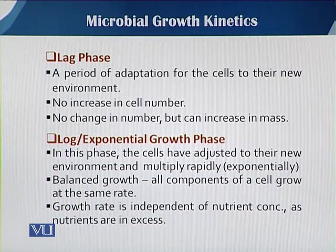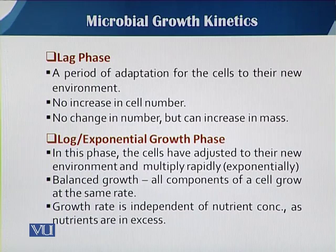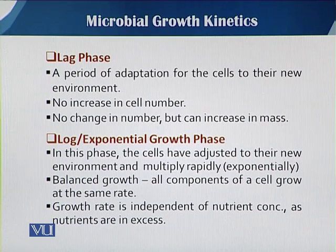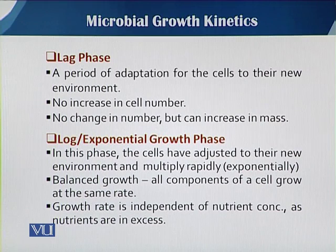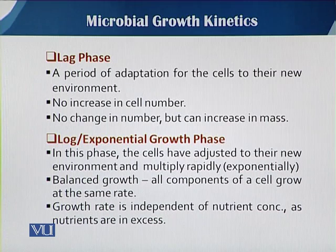As concerned the log phase or exponential phase, in this phase the cells have adjusted to their new environment — because they already adjusted in the lag phase — and they are ready to multiply. When we talk about the cell cycle, there is a need for some cell constituents before division. In the log or exponential phase, all the cells are ready to go into the M stage, where the cell can divide either mitotically or meiotically. The cells have adjusted to their new environment and are ready to multiply exponentially. This can also be called balanced growth, in which all components of the cell grow at the same time, and the growth rate is independent of the nutrients, as almost all nutrients are in excess amount.